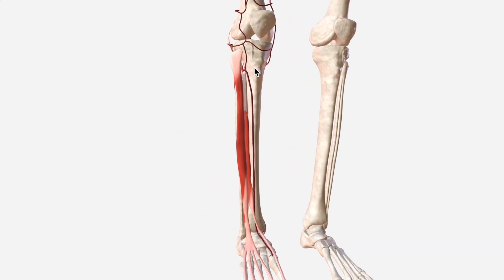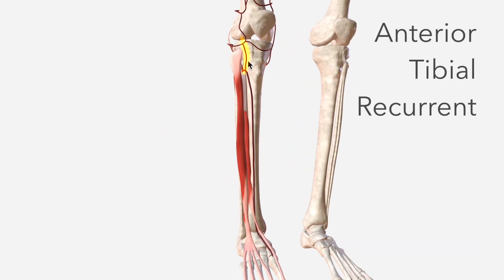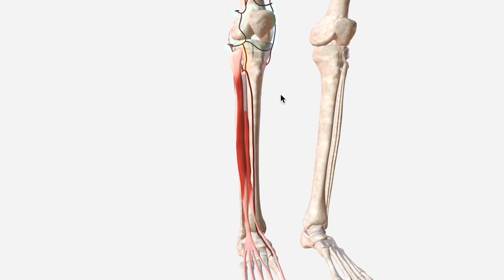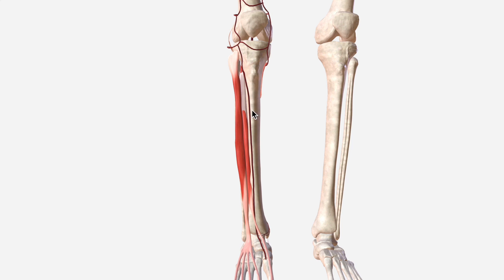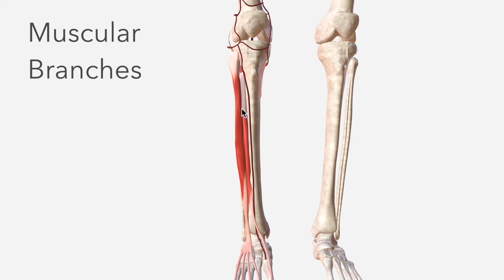Next we have the anterior tibial recurrent, which ascends in the tibialis anterior muscle — sitting in front of the tibia. The anterior tibial recurrent also contributes to the genicular anastomosis, supplying the knee joint. We also have smaller muscular branches supplying the muscles of the anterior compartment.